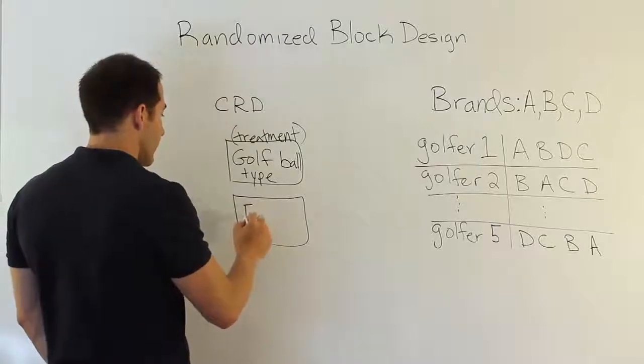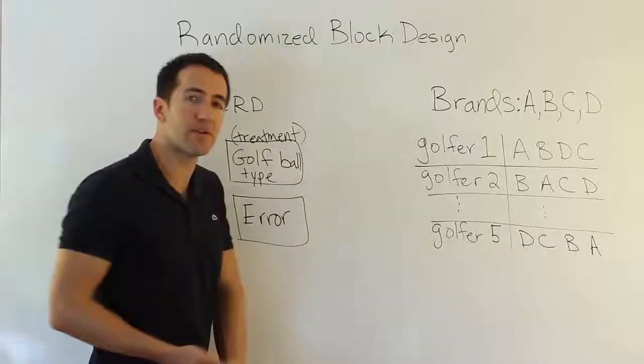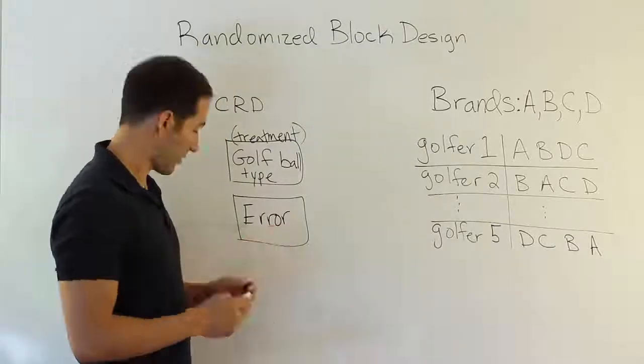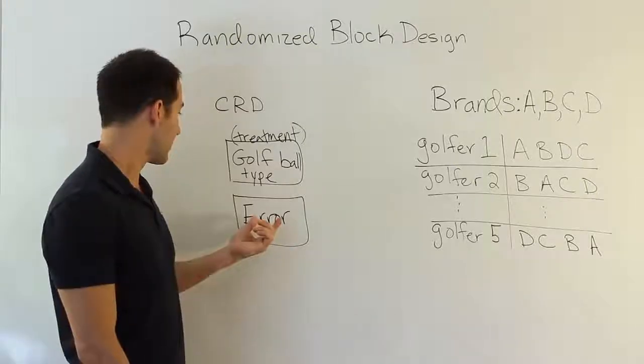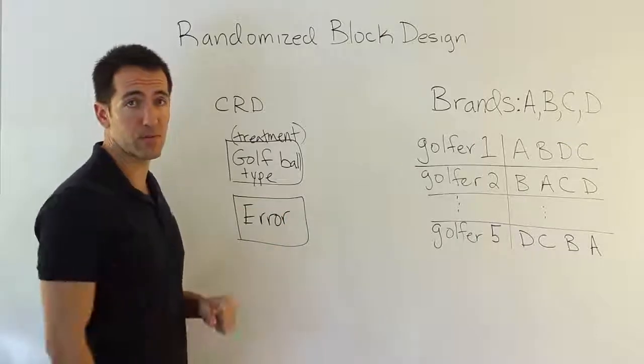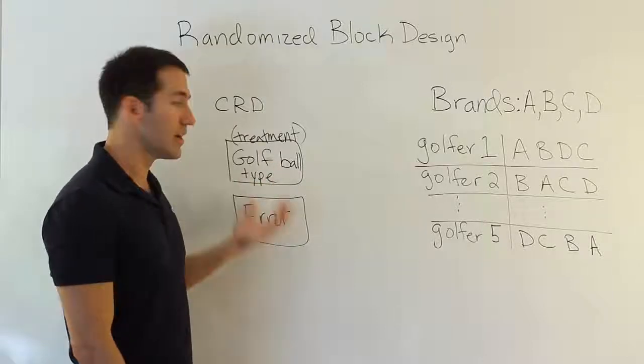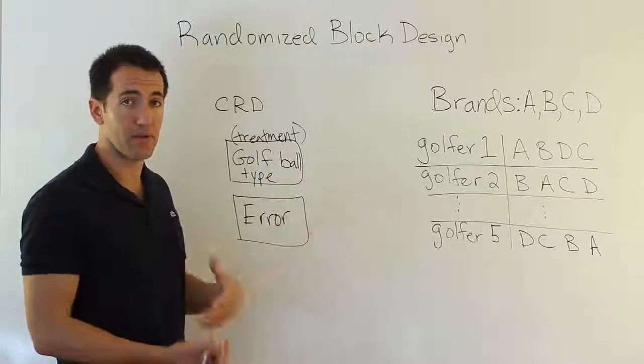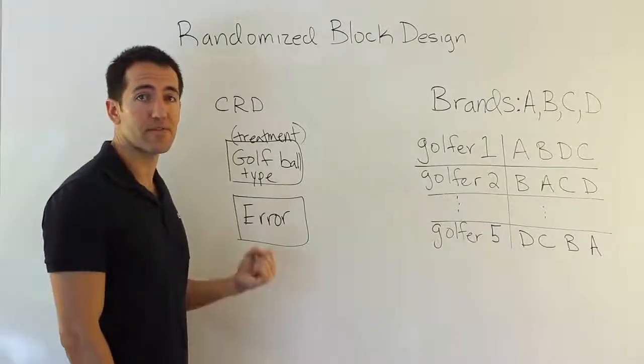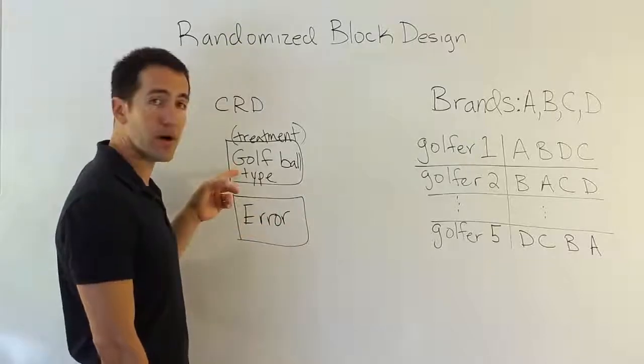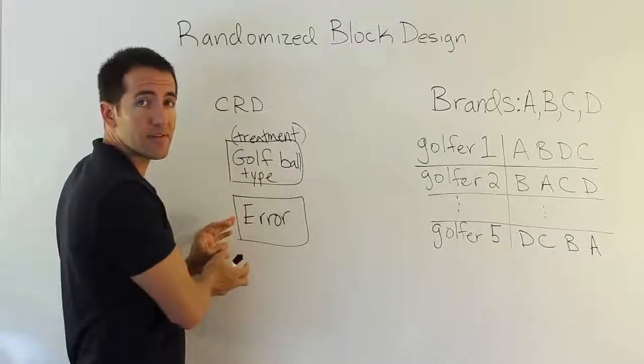And then all the other stuff is put into the error term, the experimental error term. This is essentially everything we don't know or care about. Maybe it's the golfers, for example. Maybe they make a difference, and so that's why there's going to be differences. Maybe it's the weather outside, the wind, the driver they use to swing, the gloves they're wearing. There could be countless different things that could affect the flight of a ball, the wind as they struck the ball. Anything that's not a golf ball, we throw it to error. The type of golf ball is the treatment. Everything else gets thrown into error. That's a completely randomized design.